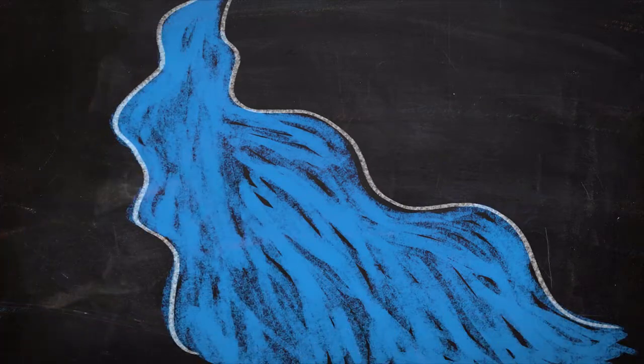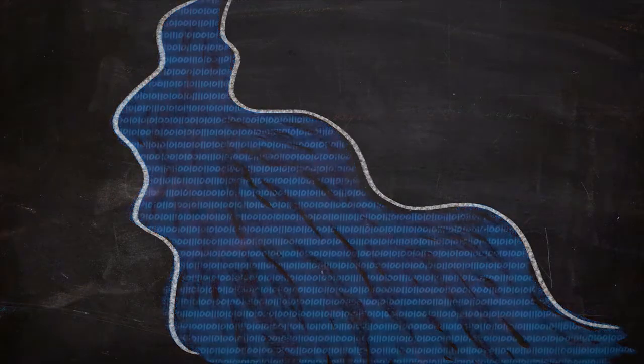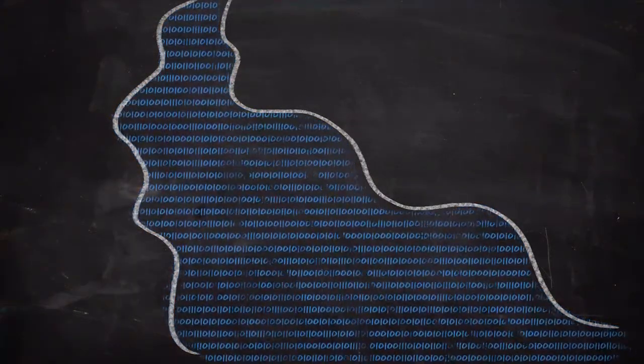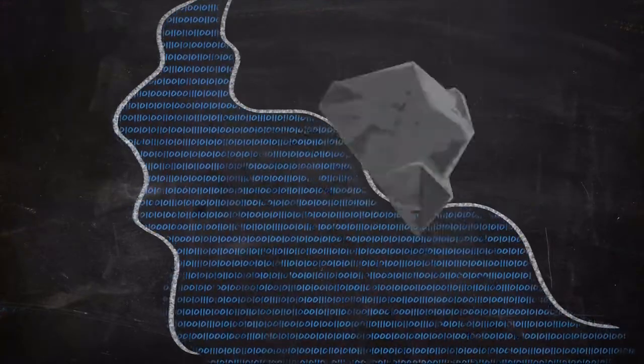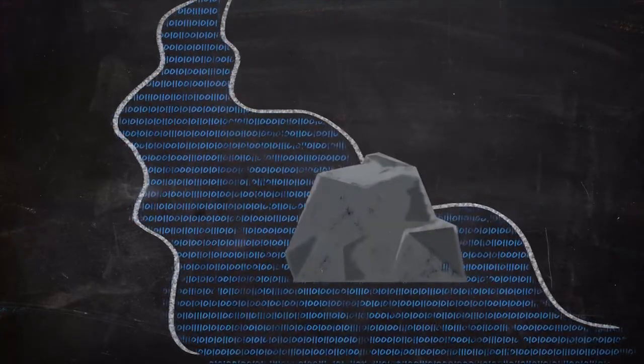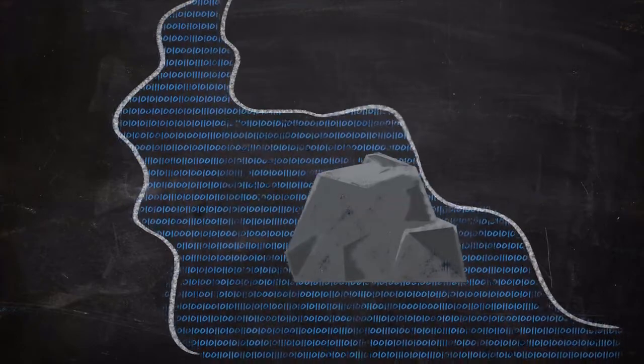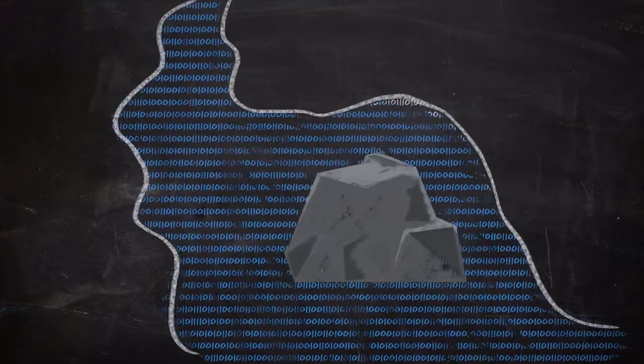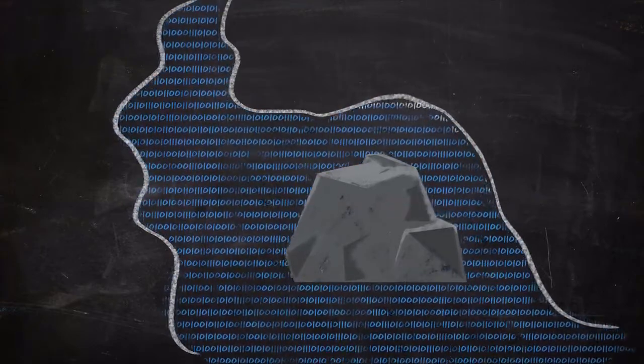Just as water finds its lowest point, your data should find its most efficient path using the best networks as it travels. If the path the data is using becomes obstructed, shouldn't the data simply flow around the obstacle, just like water flows around rocks in a stream? Why should the end users be affected?